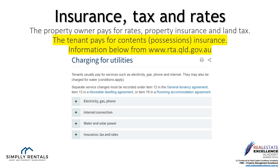During the tenancy agreement, it is your responsibility to pay for your own contents and possessions insurance. Refer to the terms of the agreement in relation to electricity, gas, phone, internet, water, or solar power to be aware of all your responsibilities and requirements for connections of such services. The property owner pays for rates, property insurance, and land tax. Our agency strongly recommends that you ensure you have contents and possessions insurance.